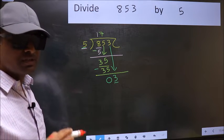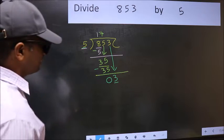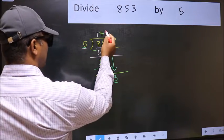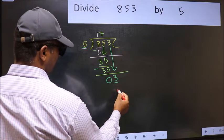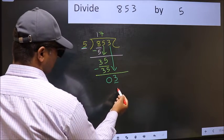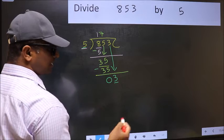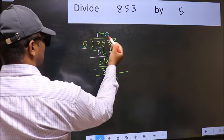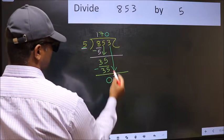Instead, what you should think of doing is, what number should we write here? If I take 1, we will get 5. But 5 is larger than 3. So what we should do is, we should take 0. So 5 into 0, 0.